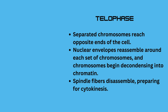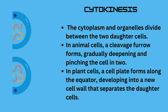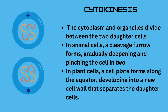In cytokinesis, the cytoplasm and organelles divide between the two daughter cells. In animal cells, a cleavage furrow forms, gradually deepening and pinching the cell in two. In plant cells, a cell plate forms along the equator, developing into a new cell wall that separates the daughter cells.